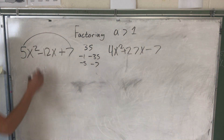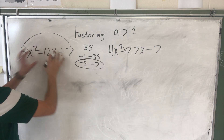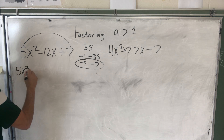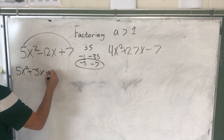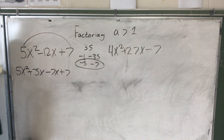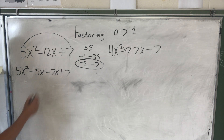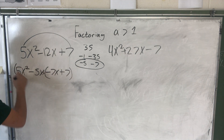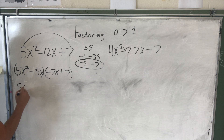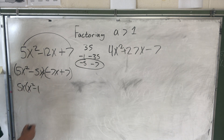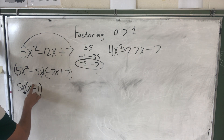Which of those add to be negative 12? Negative 5 and negative 7. So remember, the first step is splitting the middle term: 5x² minus 5x minus 7x plus 7. That can just be written as minus 5x. Now let's factor. From the first group I can factor out 5x, leaving x minus 1.